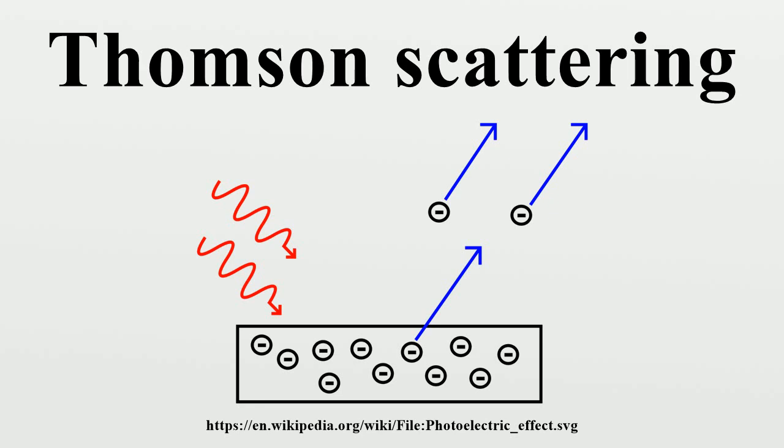where n is the density of charged particles at the scattering point, I is incident flux, and σ is the Thomson cross-section for the charged particle, defined below.